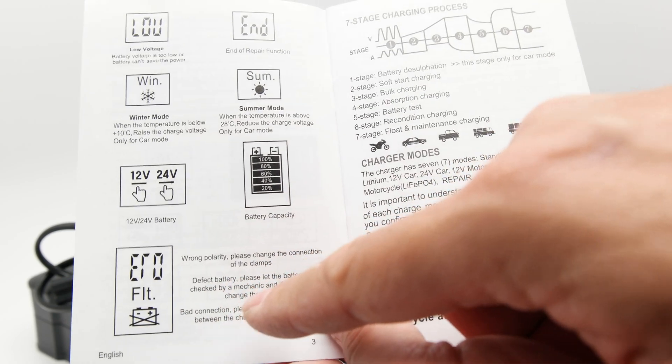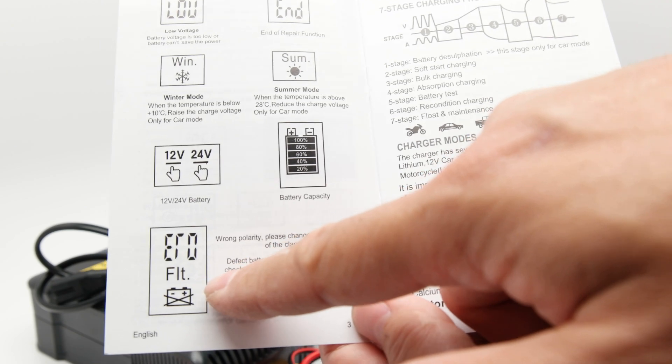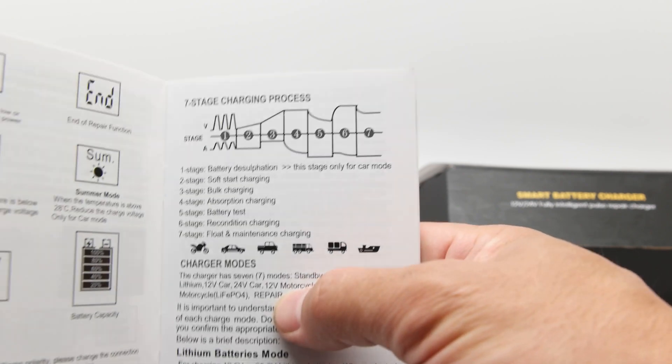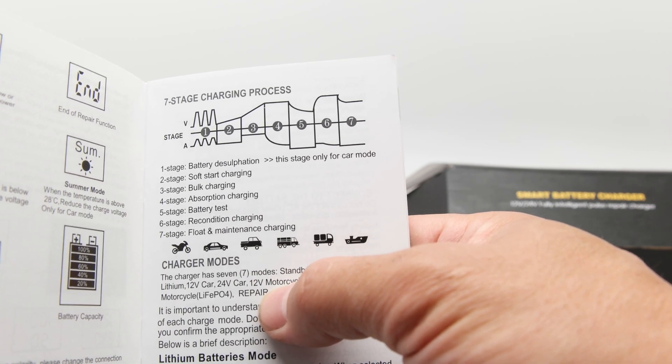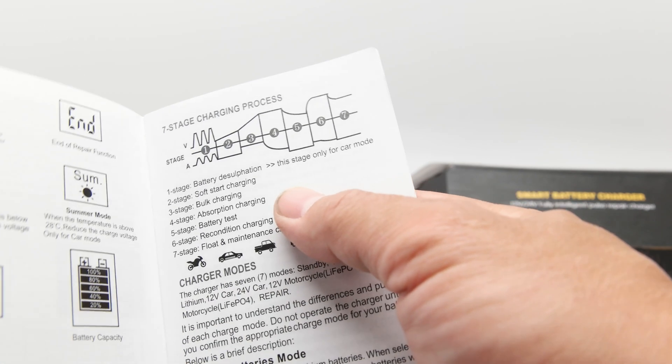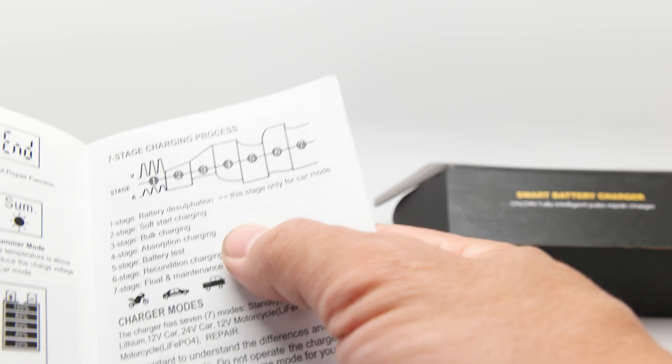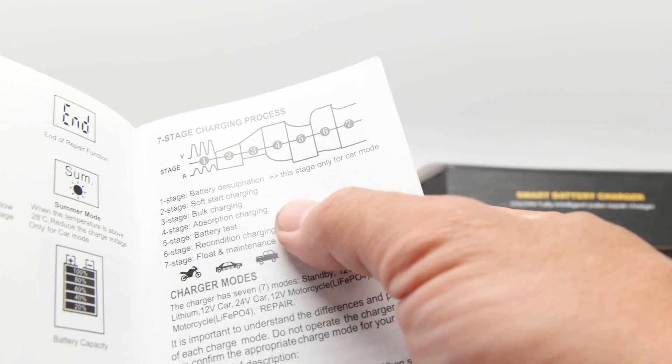Well, that means you got a completely dead battery, right battery capacity. And it'll let you know there's wrong polarity, like you stuck on the clamps wrong. Seven stage charging process, you got first stage is battery desulfation. That's good. This stage is for car mode only, then you got a soft start, which is really key. Then you got the bulk of the charging, which is where it spends most of its time charging up the battery, then you got absorption charger, which is basically the final trickle charging at the end.